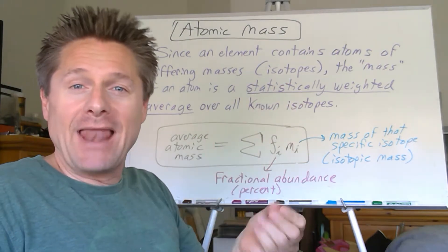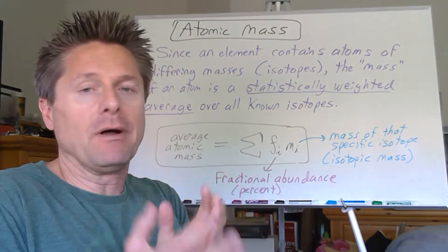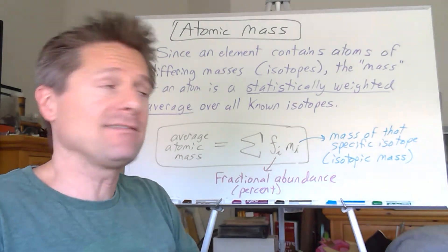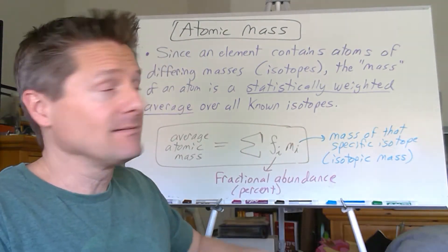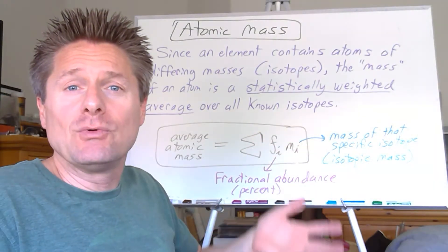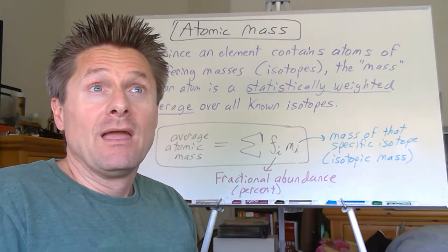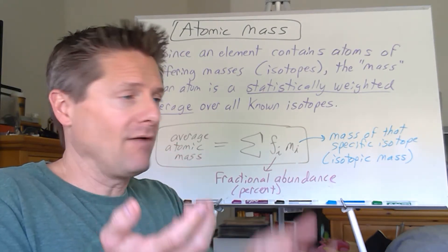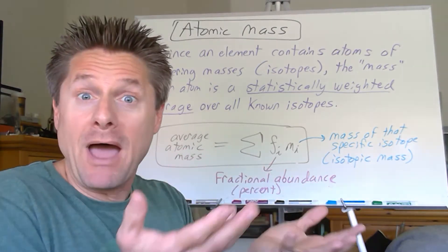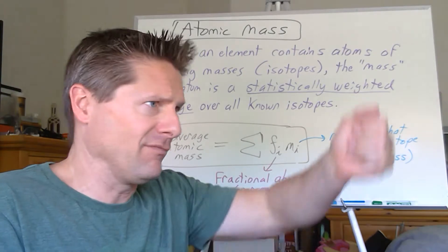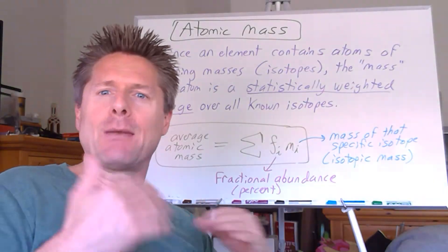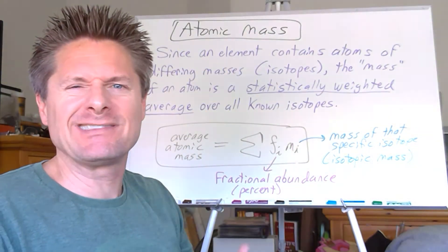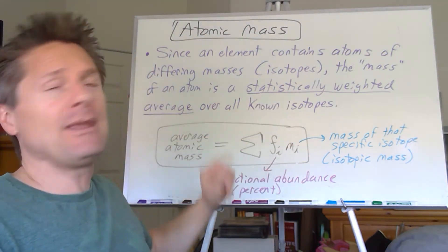If we take 100 atoms of, say, iron, they're not all going to be the same mass. Some will be one isotope mass, some another. We cannot do a simple average because the isotopes don't come in equal percentages. For carbon, it's like 90-something percent carbon-12 and a couple percent carbon-13 - so we can't just add them together and divide by three. We have to do what's called a statistically weighted average.